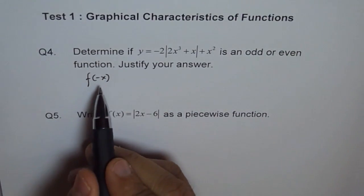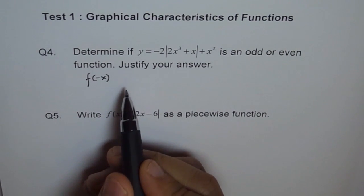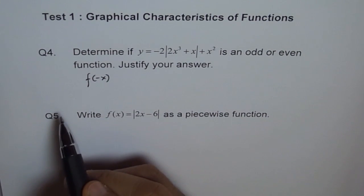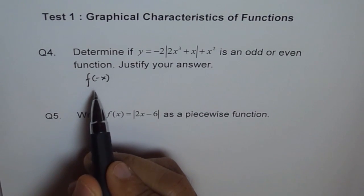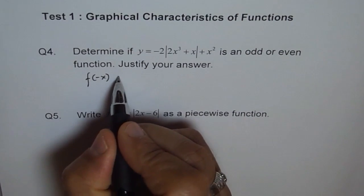If f(-x) equals f(x), then the function is even. And if f(-x) equals minus f(x), then the function is odd, right? So let's figure out what it is.